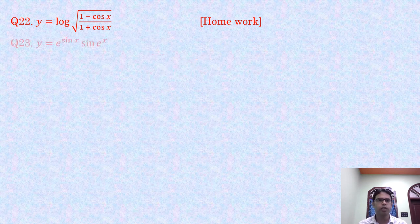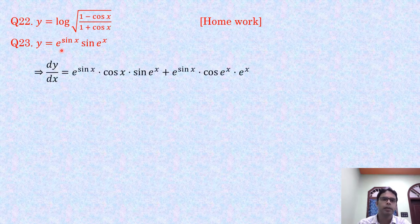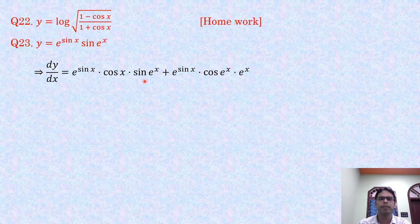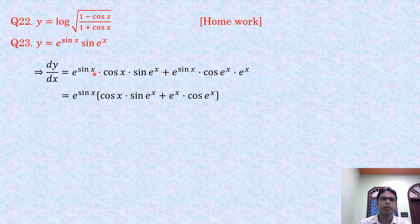Problem 23: y = e^(sin x) · sin(e^x). Using the product rule: dy/dx = e^(sin x)·cos x·sin(e^x) + e^(sin x)·cos(e^x)·e^x. Taking e^(sin x) common: dy/dx = e^(sin x)·[cos x·sin(e^x) + e^x·cos(e^x)].